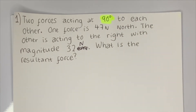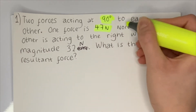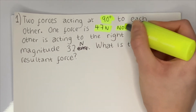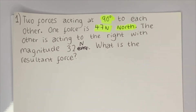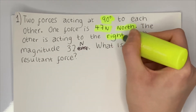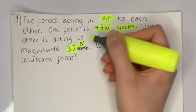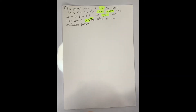The magnitude of the first force is 47 newtons and that is to the north, so now I know how to draw my first force. The other force is acting to the right — let's highlight that — and that magnitude is 32 newtons. The question is asking us what is the resultant force, so let's go through this together.